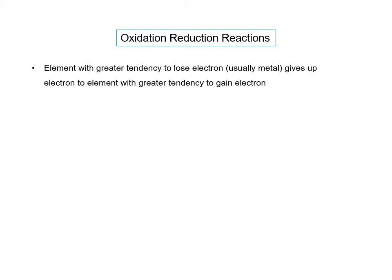In oxidation-reduction reactions, the element that has a higher tendency to lose electrons — which usually is the metal, because metals like to give up electrons — combines with an element that has a greater tendency to gain an electron, usually the non-metal. So metals usually transfer an electron to a non-metal.